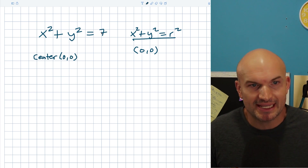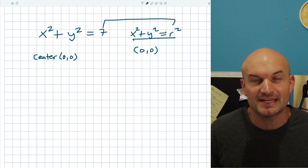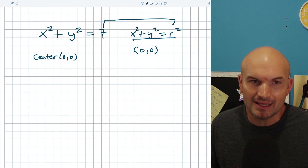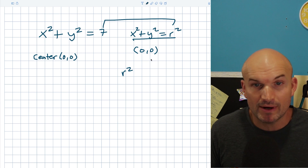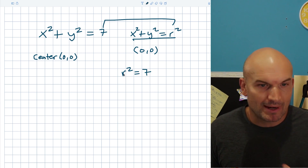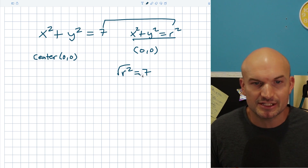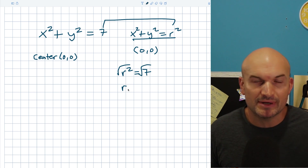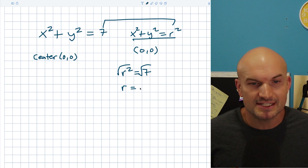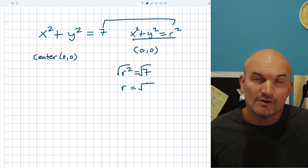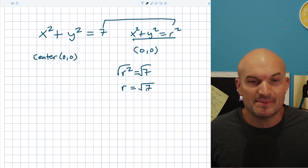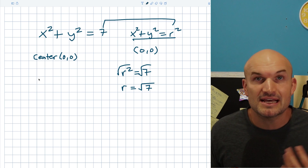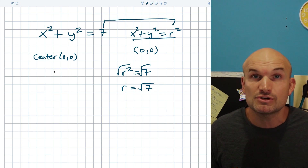Another mistake that a lot of students will make: we can see that r squared is going to be the same thing as 7. A lot of times students will square the 7 and get 49 — no, that's not what you want to do. We have r squared equals 7, so when I want to solve for r, I'm simply going to take the square root of both sides. r equals plus or minus the square root of 7. That doesn't make much sense because the radius represents the distance from the center to any point on the circle, so the only distance that makes sense is a positive distance. The radius of the circle is the square root of 7.